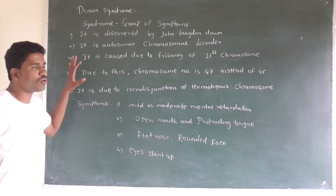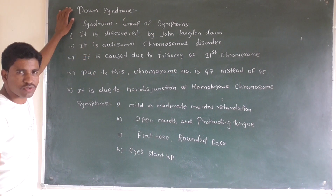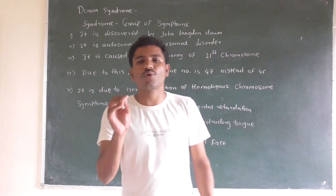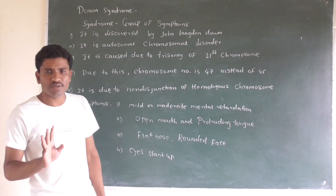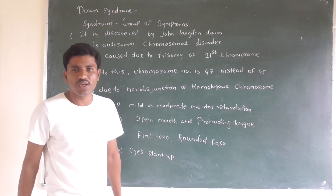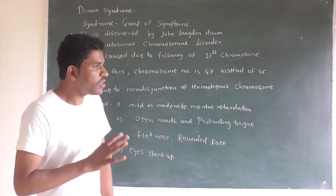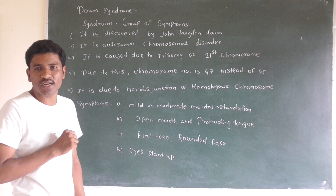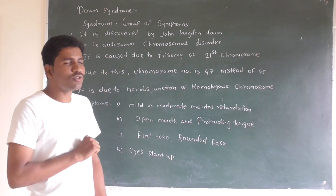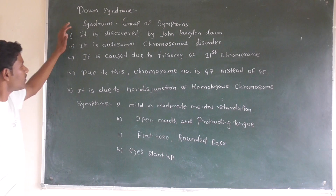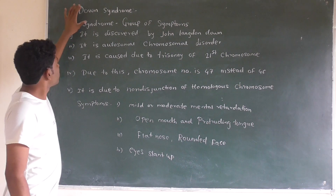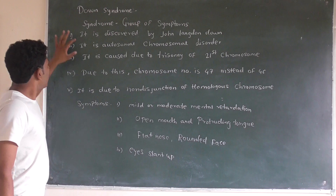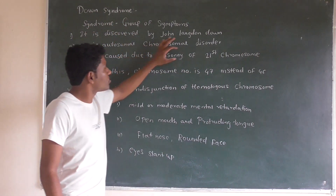Now we move to chromosomal disorders. A syndrome is a group of symptoms. The first chromosomal disorder we discuss is Down syndrome. Down is the name of the scientist — this syndrome was observed by John Down. He described it as an autosomal chromosomal disorder involving the autosomes.